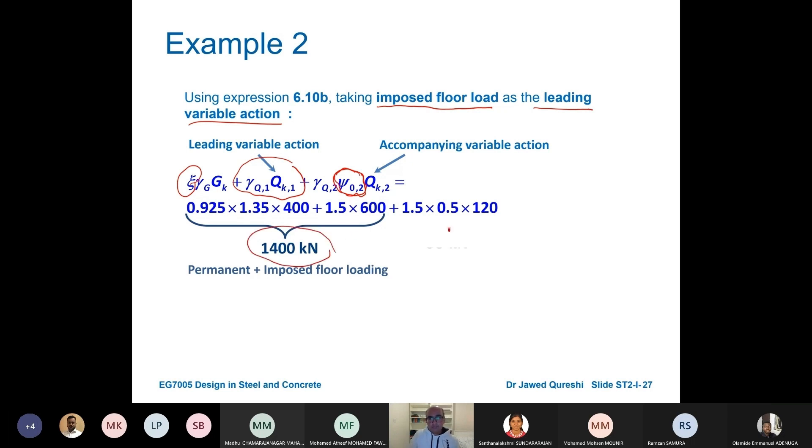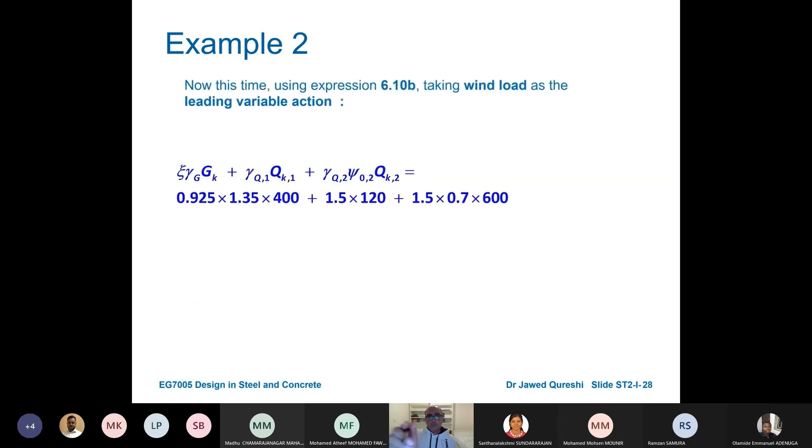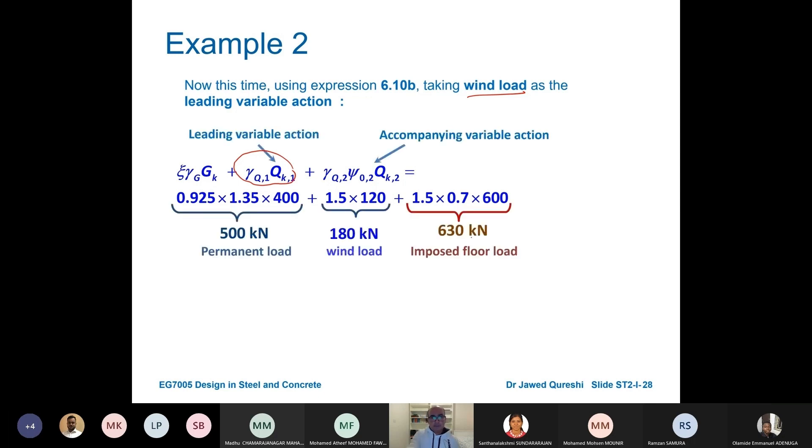And then you can see that this psi factor is applied here. After getting all the calculations the imposed load is 1400 and then wind loading is again 90 kN. Now we can take wind as leading action as well. We can take wind as leading variable action as well because the code does not distinguish. Now if we take wind load as leading variable it means that wind load will come over here, it will appear first. The reason is that because we don't have any psi factor here and then imposed load is the accompanying action.